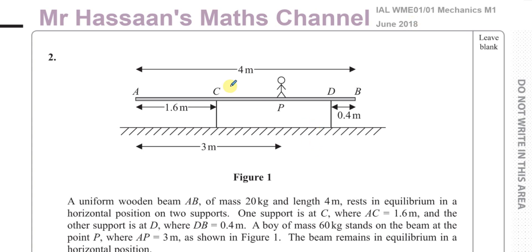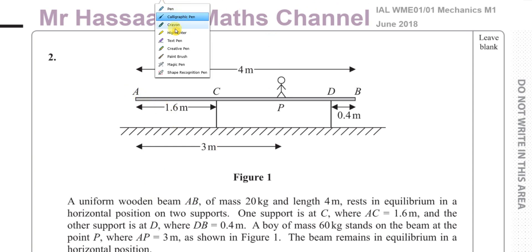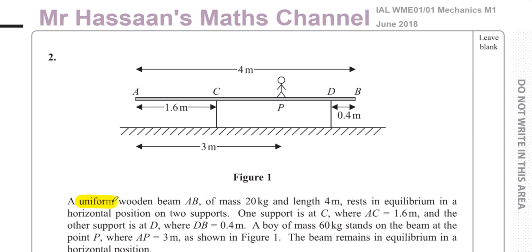This question is about moments. We have a uniform wooden beam — uniform meaning the weight of the object acts at its geometric center. The beam is four meters long, so the weight acts exactly two meters along. It has mass 20 kilograms and length four meters, and rests in equilibrium, meaning all forces and moments are balanced.